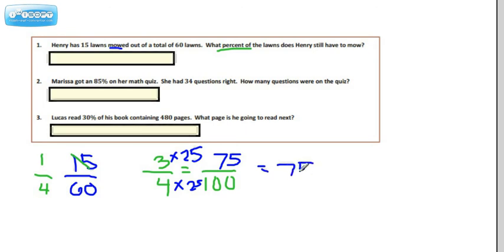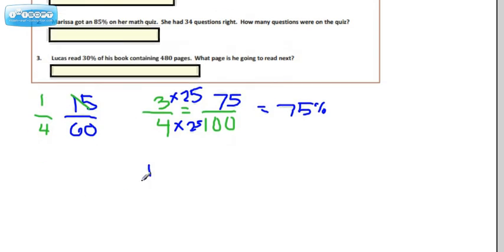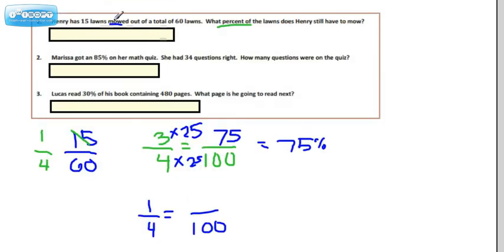Now, another way you could have done this is you could have taken the one-fourth that we had here. If you did the one-fourth to get how many were mowed first, and asked yourself what would that be out of 100, then you would have done times 25, times 25, and you would have had 25 out of 100, 25% that were mowed. And then you'd have to subtract that because they were asking how many does he still have to mow. You'd subtract the 25% from the 100% to get the 75% that way.